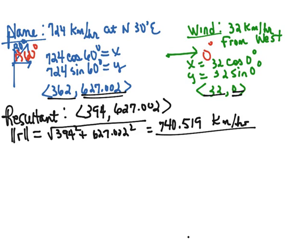We now want to find the direction. So let's look at the vector we have. We're going right 394 and up 627.002. So this is the angle that we're looking at, theta.